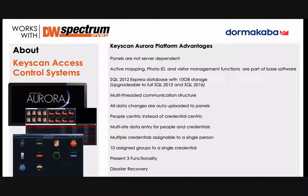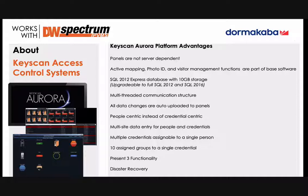We have something called the present-three functionality: if you present your card three times within five seconds to a reader, it can trigger another function if programmed to do so, and that can be programmed by reader and by credential. For example, if I'm the principal of a school, I can lock down the entire school, trigger a time zone, or trigger a relay. We can use it as a form of first-person-in as well.